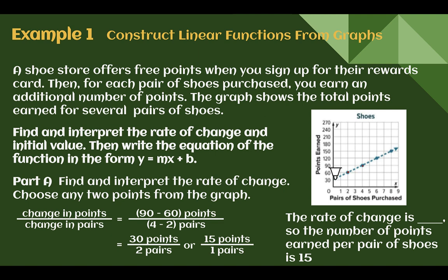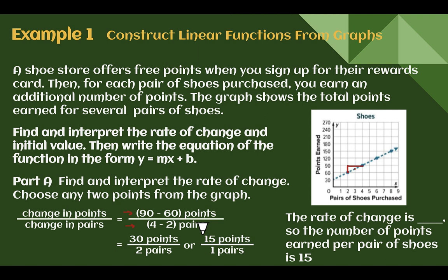We have a point here and a point here. The dashed line means the values in between don't really work out — we could have a point at three pairs of shoes, but we wouldn't be able to buy 2.5. Finding our rate of change using rise over run, this went up 30 for two pairs of shoes. The point total changed from 60 to 90, so it went up 30 when two more pairs of shoes were bought. Reducing that fraction, it's 15 points for one pair of shoes. So the rate of change is 15.